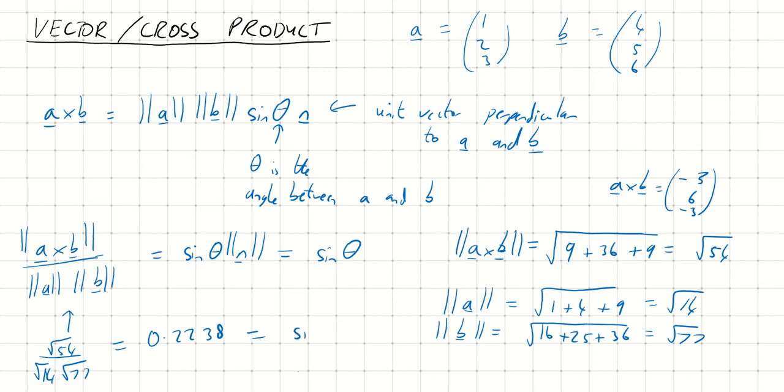And look at the right-hand side, that is equal to sine theta. So theta is inverse sine of 0.2238 is 12.90 degrees. And that theta tells us the angle between the vectors A and B.